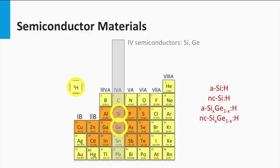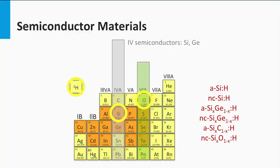The second alloy is silicon mixed with germanium, the next element in the periodic table with four valence electrons. Both hydrogenated amorphous and nanocrystalline silicon germanium alloys are being used in thin film silicon solar cells. Silicon is also mixed with carbon, a four valence electron material, leading to hydrogenated amorphous silicon carbide. Another interesting silicon-based alloy incorporates oxygen, a six valence electron atom, into the lattice. This nanocrystalline silicon oxide is used in thin film silicon solar cells as well.